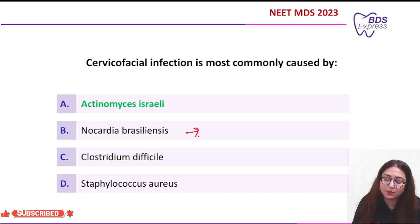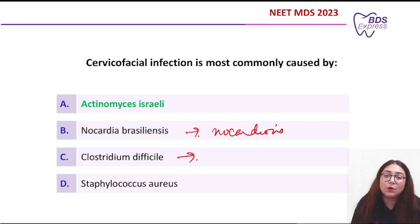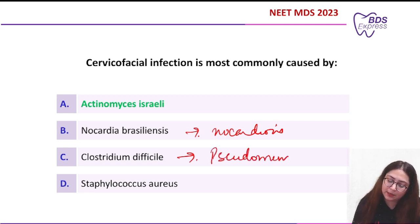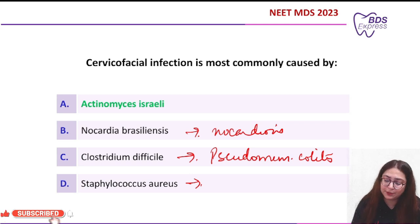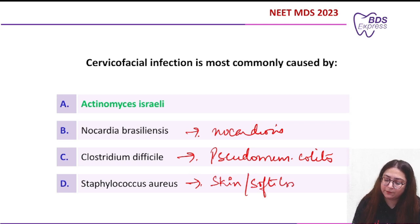Coming back to the question: Nocardia causes nocardiosis. Clostridium difficile causes pseudomembranous colitis. And Staph aureus is responsible for causing multiple skin and soft tissue infections. These are the reasons to rule out the other options.